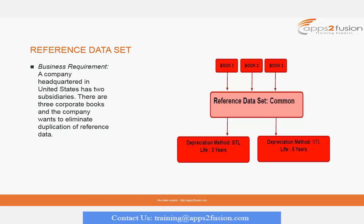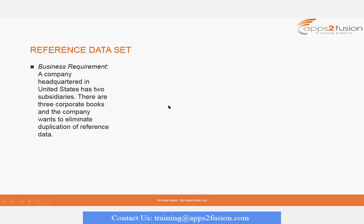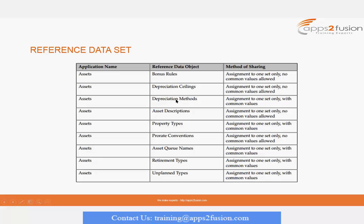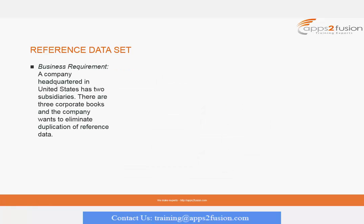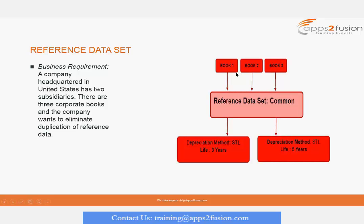The books will be explained in more detail later. For now, let's say there are three books, and we want the depreciation methods to be shared in common between those three books — that's essentially the use of the reference data set. For the team, a book is really a segregation of data. Think of it as having three companies and wanting to keep company one, two, and three data separate — that's what a book is: the segregation of fixed asset data.